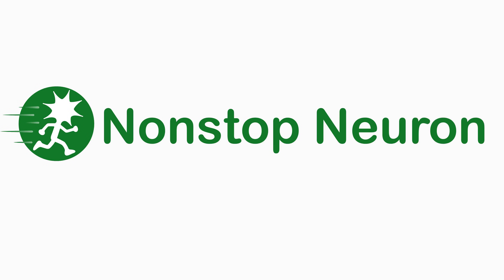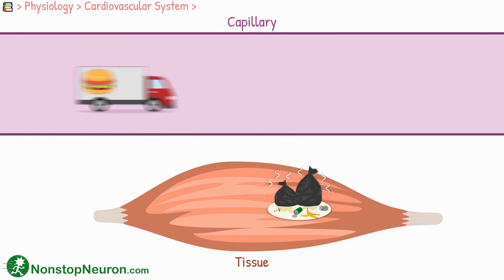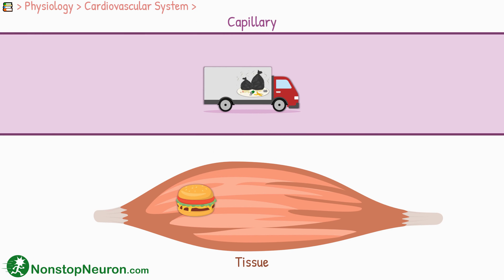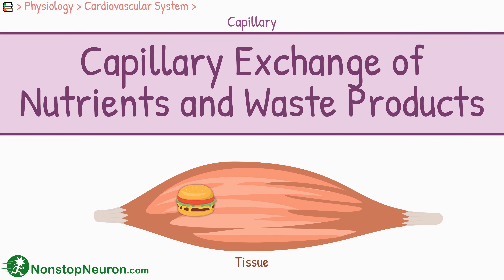Welcome to NonstopNeuron.com, where learning medical concepts is as easy as watching cartoons. In this video, we will talk about the home delivery of food and door-to-door garbage collection facility that the blood provides to all the cells in the body. Or in boring words, we will talk about the capillary exchange of nutrients and waste products.